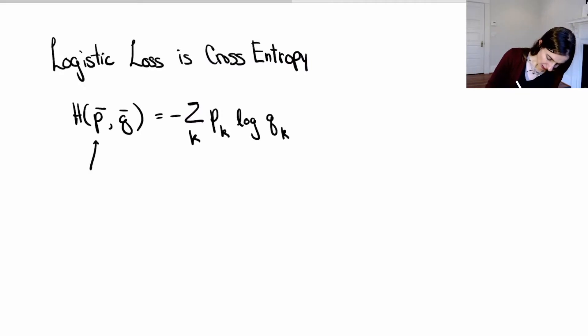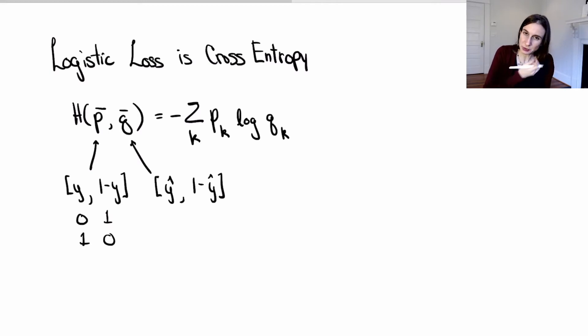So in this case, the outcomes are either y or not y, 1 minus y. This could be either 0 or 1, or it could be 1 or 0. Those are the two outcomes. And then for q, you have y hat and 1 minus y hat. So those are the two distributions we're trying to judge the similarity of. It's p and q, and that's the same thing as judging essentially the similarity between y and y hat.